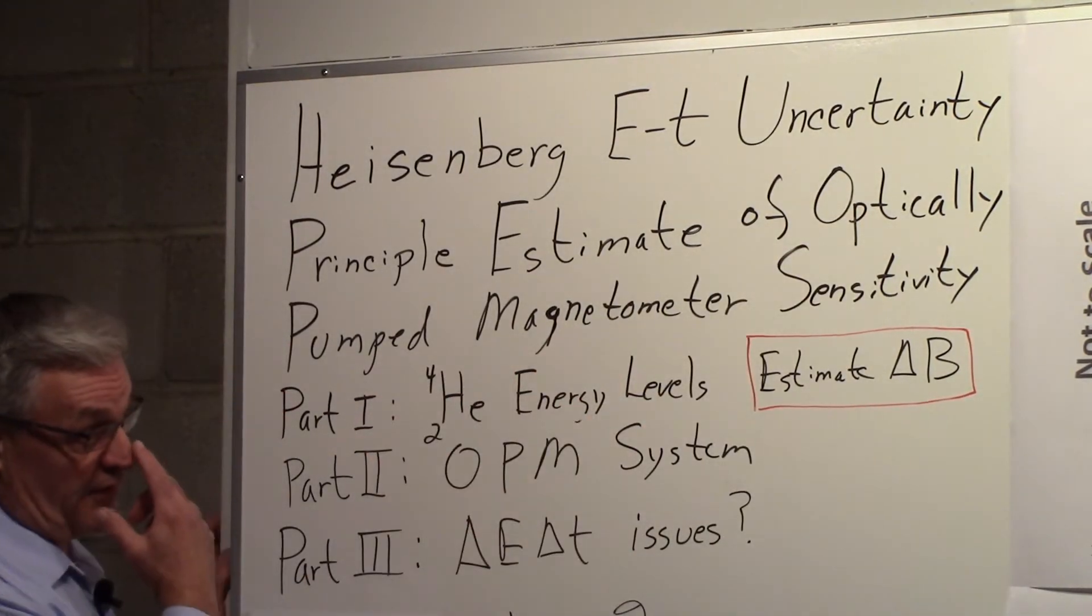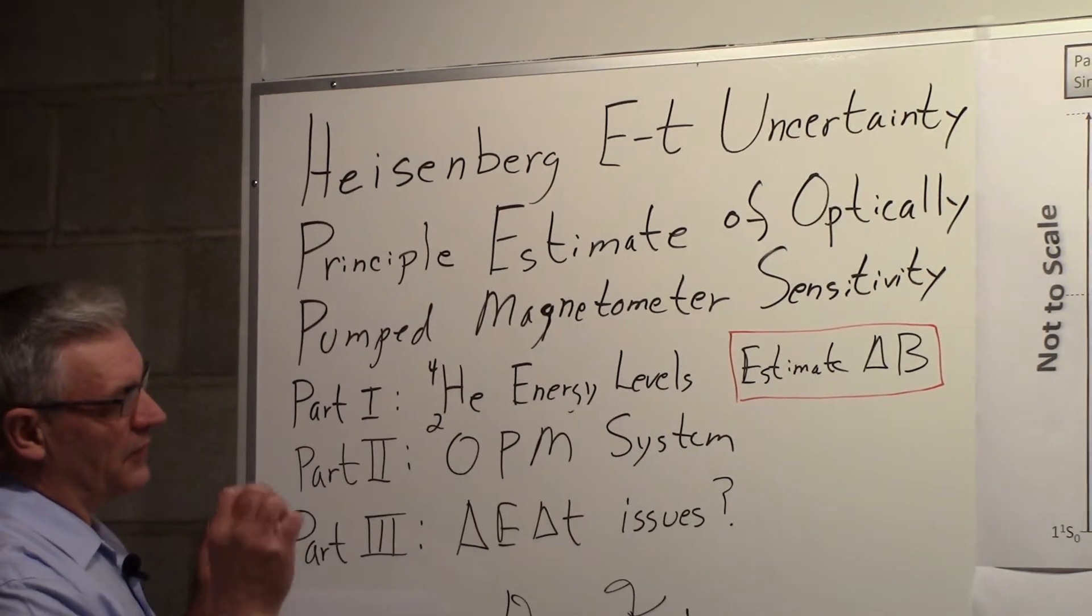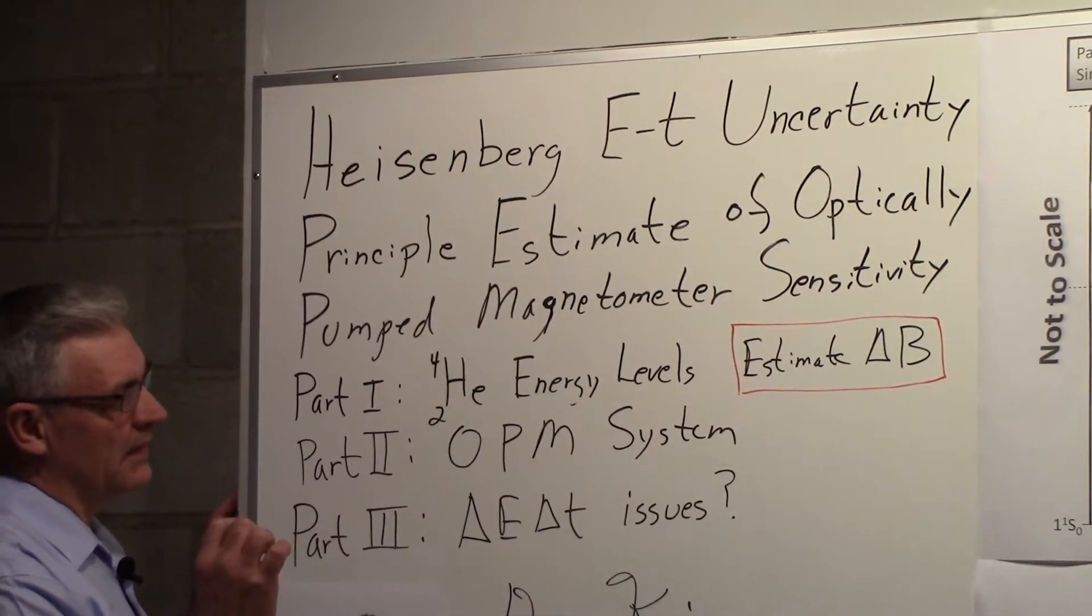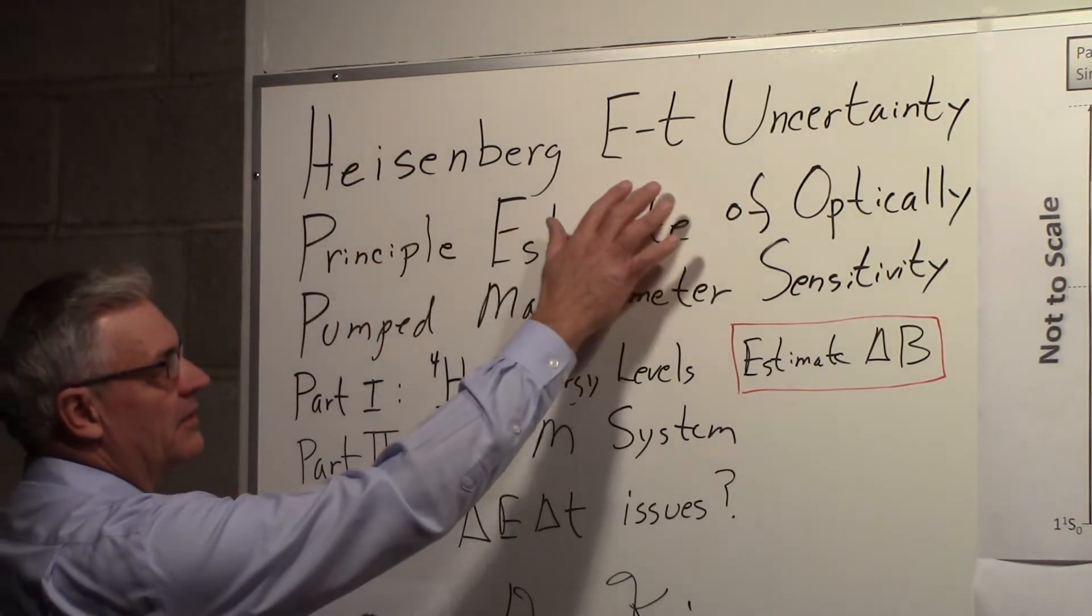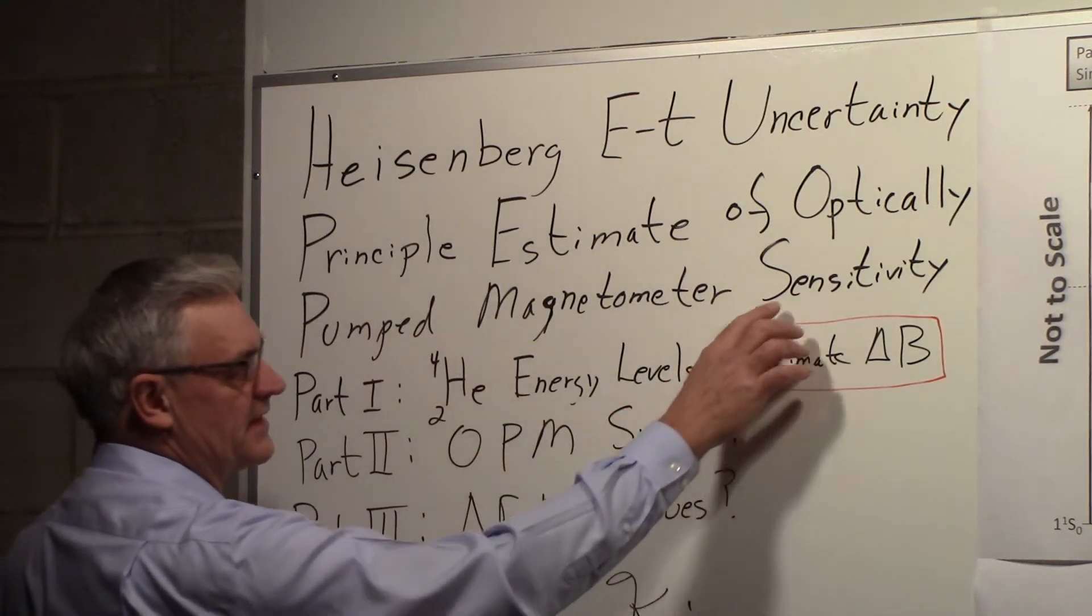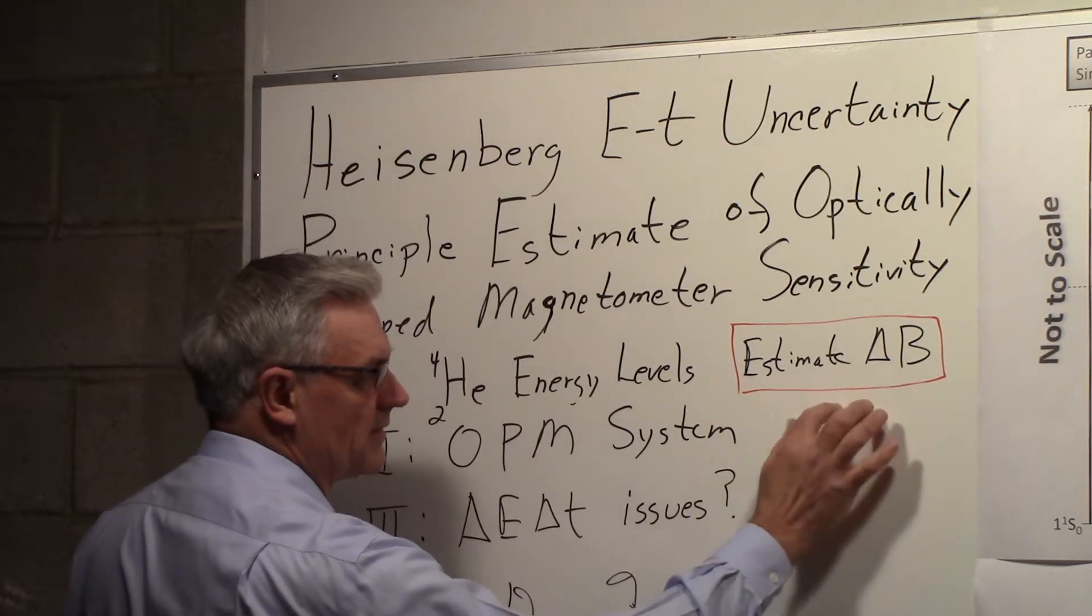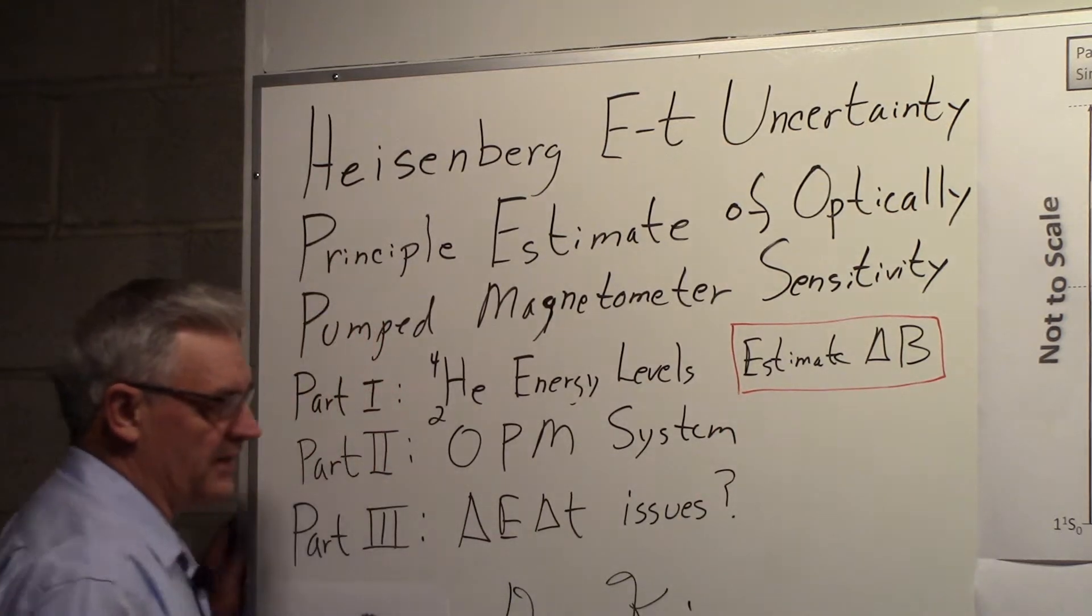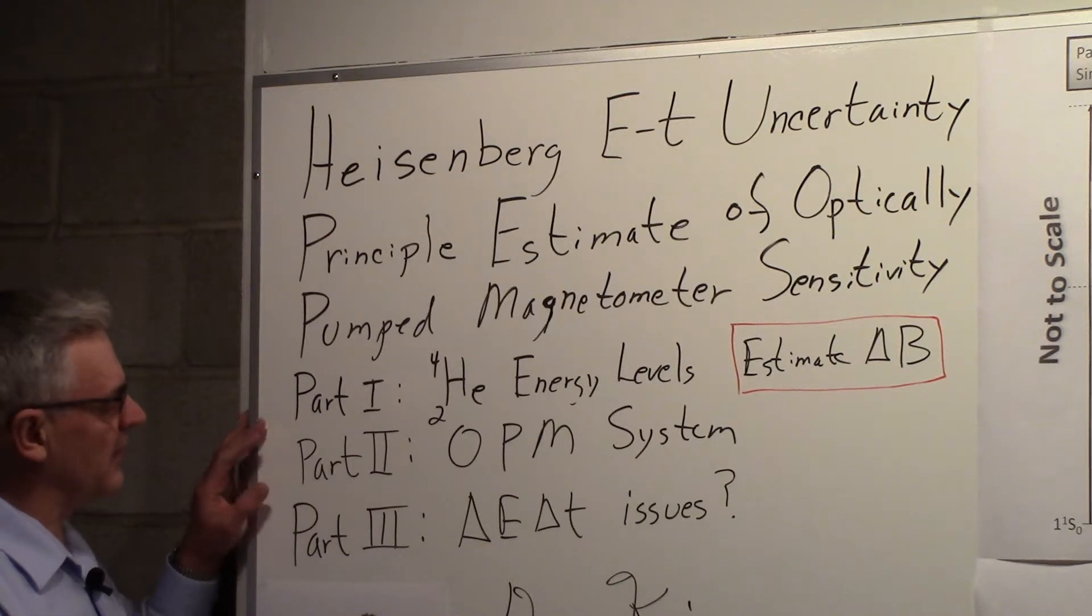Optically pumped magnetometers are very interesting instruments. We're going to take a look at using the Heisenberg energy-time uncertainty principle to get an estimate of the sensitivity of the optically pumped magnetometer. In other words, we're going to come up with something to give us an estimate for delta B.